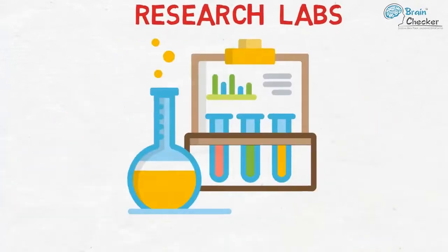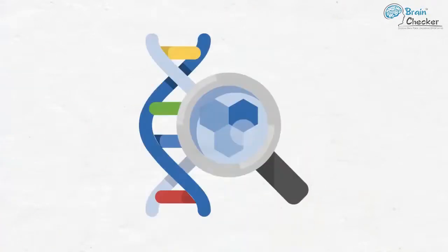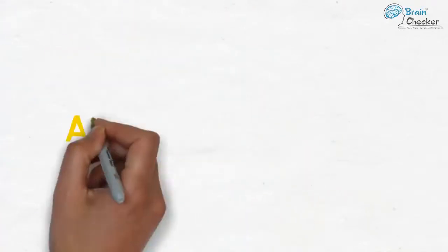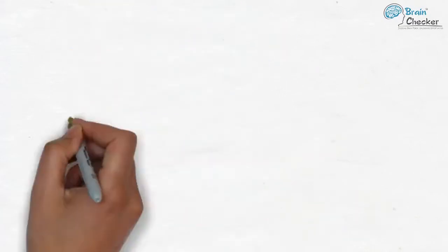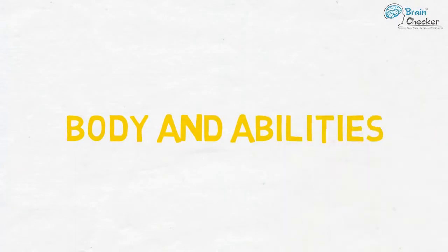Genetic engineers generally work long hours at research labs. Their main focus always lies on the DNA and its attributes. With the help of artificial methods, they are able to rearrange the DNA sequence in an organism, leading to fundamental changes in his body and abilities.